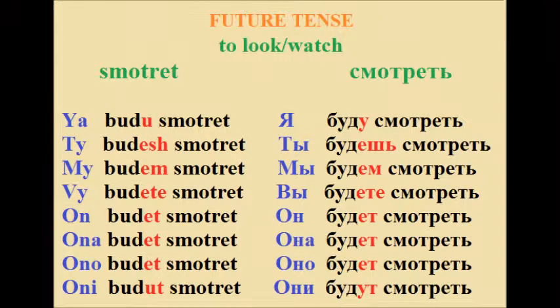And the last tense we have is the future tense. Let's look at how смотреть changes here. Я буду смотреть. Ты будешь смотреть. Мы будем смотреть. Вы будете смотреть. Он будет смотреть. Она будет смотреть. Они будут смотреть.